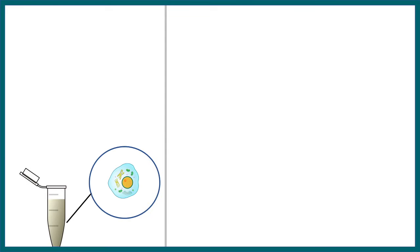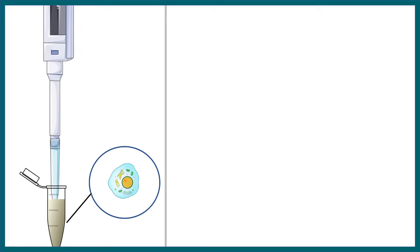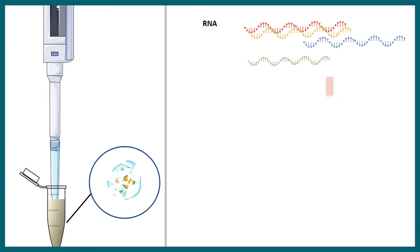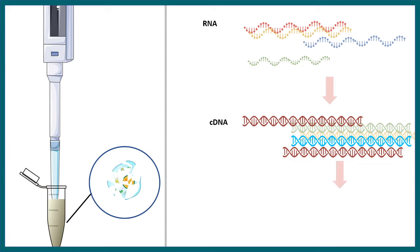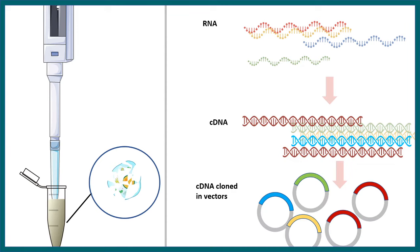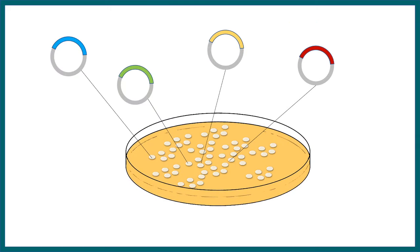Let's say we have taken a cell and under certain circumstances we want to know about expression libraries. We need to dissociate the cell, break the cell membrane, take out the RNA, make cDNA from it, and then clone this cDNA into specific vectors. We then have a collection of vectors which we transfer into E. coli, giving us a plate with thousands of colonies, each harboring a specific sequence of interest.